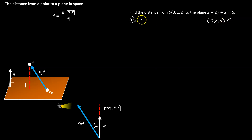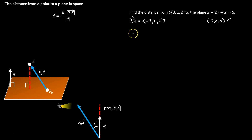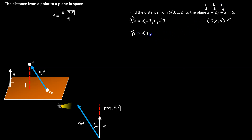The vector p0 to s is going to look like the components of s minus p0, giving us (-2, 1, 2). Then I need to dot that with the normal vector from the plane. Looking at our plane equation, the components of n are the coefficients on x, y, and z. X has a coefficient of 1, y has a coefficient of -2, z has a coefficient of 1. So the normal vector looks like (1, -2, 1).